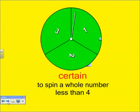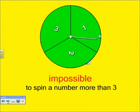On this spinner, it is certain that we will spin a whole number less than four, because number one, two, and three are all whole numbers and they are all less than four. So our chances of spinning a whole number less than four are three out of three. So it is certain that we will spin a whole number less than four.